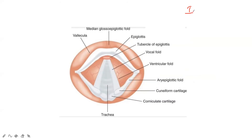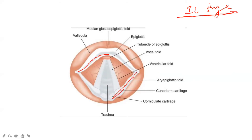This is an indirect laryngoscopy image — they had this in the mid-year exam. This is the epiglottis, and behind it is the arytenoid. The ligament fold connecting the arytenoid to the epiglottis is the aryepiglottic fold. This is the true vocal cord. This is the ventricular fold — the false vocal cord — and the median glossoepiglottic fold is here. The space here is the vallecula.